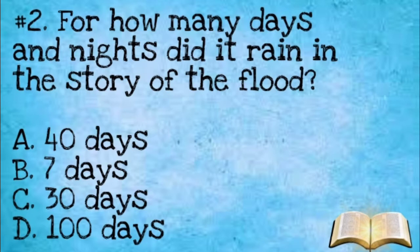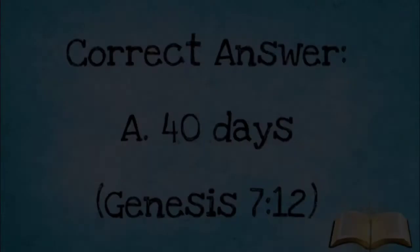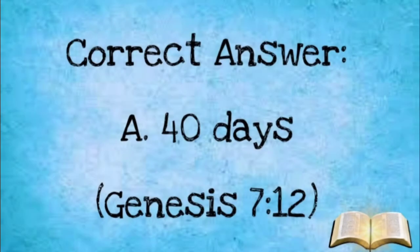Number two: For how many days and nights did it rain in the story of the flood? A: 40 days and 40 nights. B: Seven days and seven nights. C: 30 days and 30 nights. D: 100 days and 100 nights. The correct answer is letter A, 40 days and 40 nights.